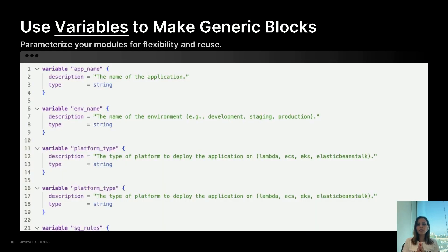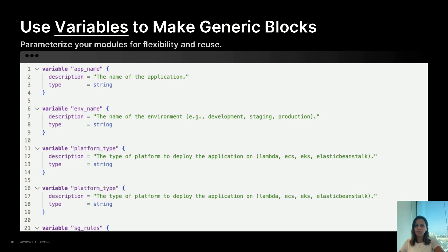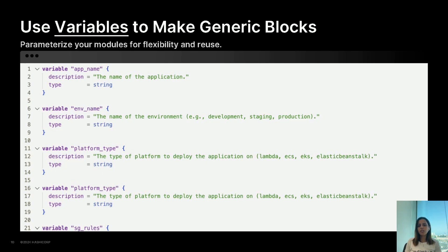To make our building blocks even more powerful, we use variables. Variables allow us to parametrize our modules, making them flexible and adaptable to different use cases. For example, instead of hardcoding a specific instance type or region, we use variables to pass these values into the modules. This way, the same module can be used across different environments and projects with minimal changes.